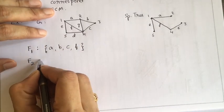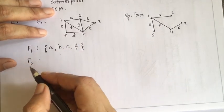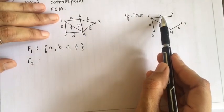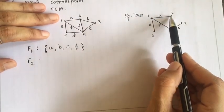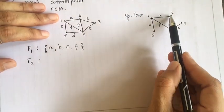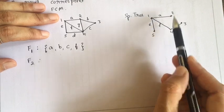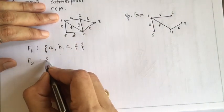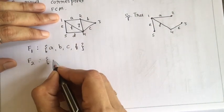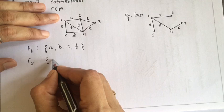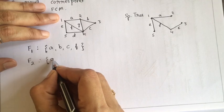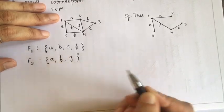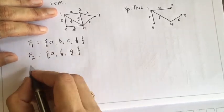The second fundamental cycle: if we add edge G between vertices 2 and 4 to edges A and F, that forms a cycle. So A, F, G is another fundamental cycle.